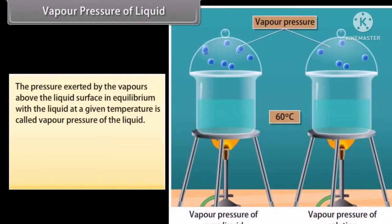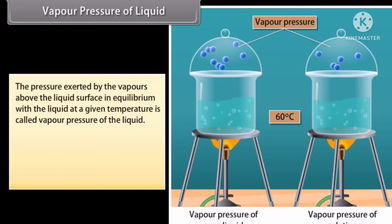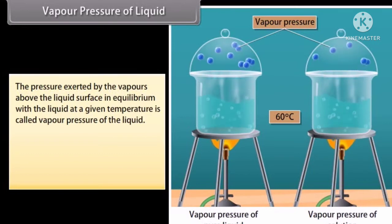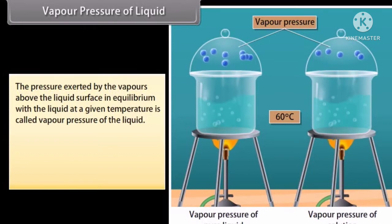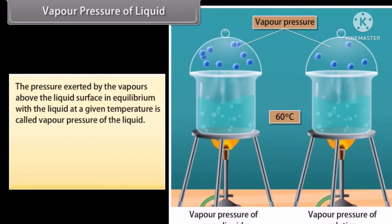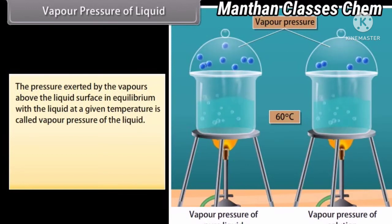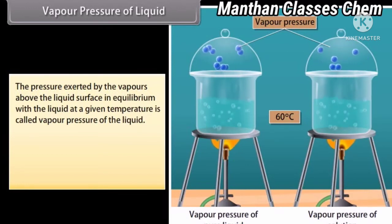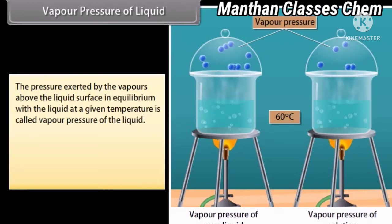Vapor pressure of liquid. The pressure exerted by the vapors above the liquid surface in equilibrium with the liquid at a given temperature is called vapor pressure of the liquid. The vapor pressure of a liquid depends on the nature of liquid and temperature.